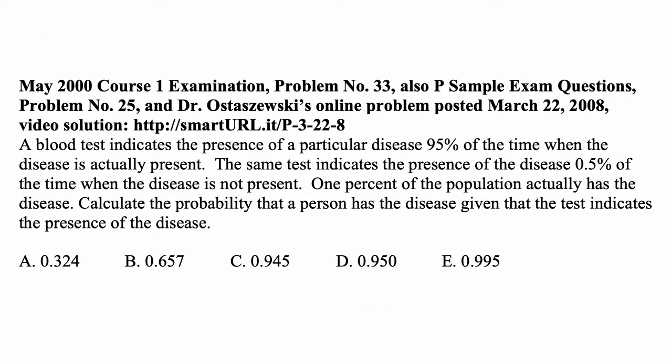Here's a problem for today for exam P. A blood test indicates the presence of a particular disease 95% of the time when the disease is actually present. The same test indicates the presence of the disease 0.5% of the time when the disease is not present. 1% of the population actually has the disease. Calculate the probability that a person has the disease given that the test indicates the presence of that disease.